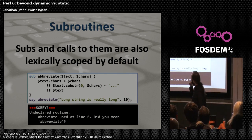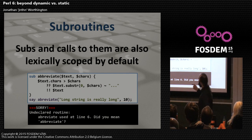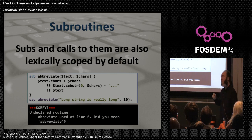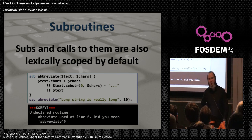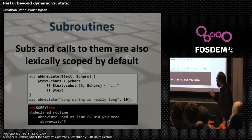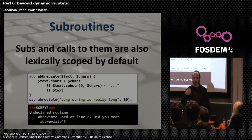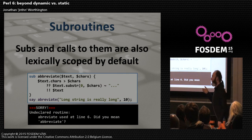We've made sub resolution lexical, not just declaration. When you call a subroutine, we look for it in the current lexical scope. If we don't find it, we come back and say, 'By the way, you used this name — did you mean the correctly spelled version?' This is just another place where by making subroutines lexical by default, we gain the ability to validate things at compile time.